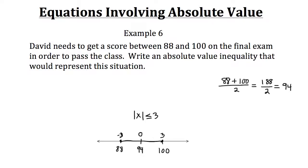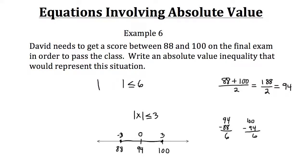Now the distance between 94 and 88 is 6. And checking the other side: 100 minus 94 is also 6. So we know our inequality is going to be less than or equal to 6, because that's the maximum distance we want to travel on the number line from the midpoint.